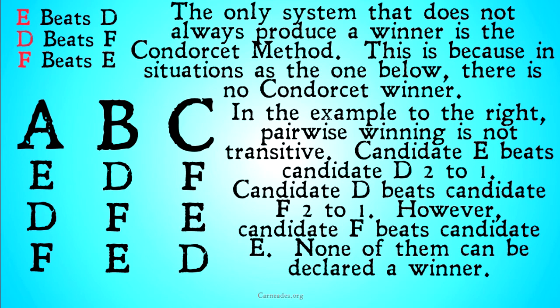The Condorcet method does not say that they're all winners or they're all tied — it says that none of them are winners. This is going to come in importantly in some of the other criteria that we look at, and Arrow's impossibility theorem.